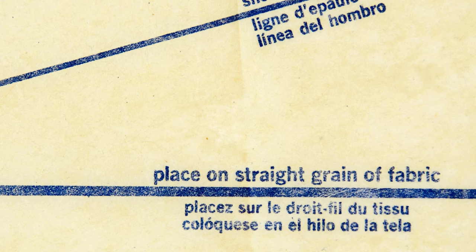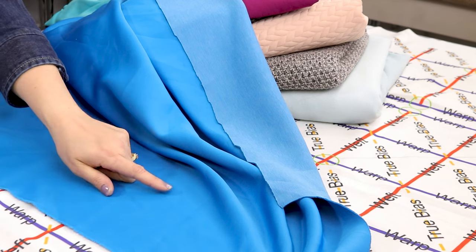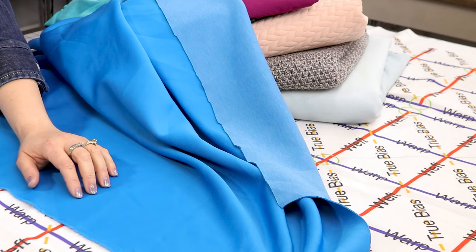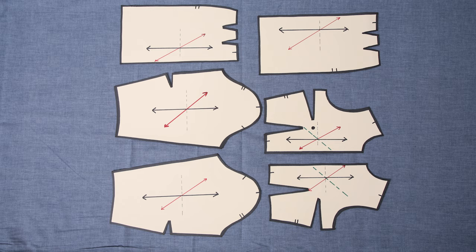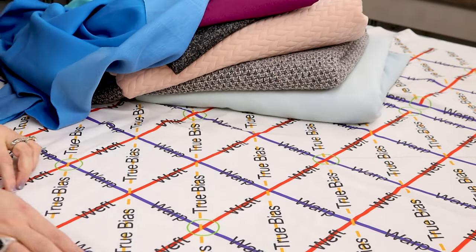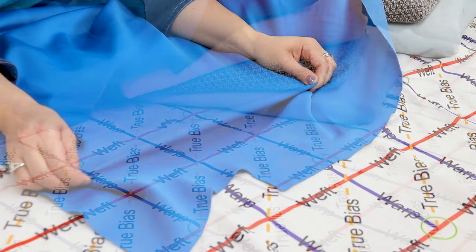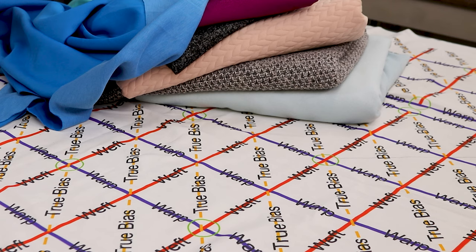When you lay out a pattern and your pattern tells you to match the grain line, the grain line that you line up runs parallel to the salvage edge. Weft yarns — I always remember that weft rhymes with left, so it makes me think left and right. You have stronger threads going up and down, and then threads going back and forth that if you tug on them have a little more give. That's going to be important when you're laying out your fabric.